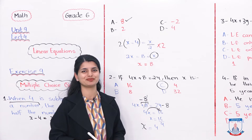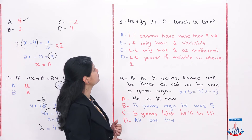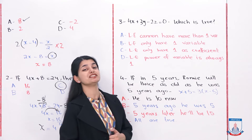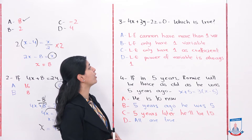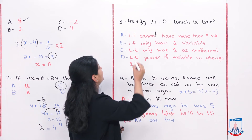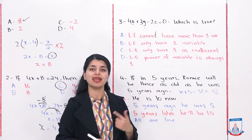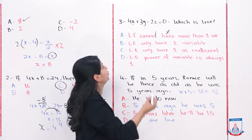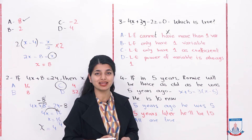Let's look at MCQ number 3. The equation is 4x plus 3y minus 2z equals 0. This is a linear algebraic equation. Which of these statements is true? Option A says linear equations cannot have more than one variable. But the variables are x, y, and z — there are 3 different variables — so Option A is completely false.